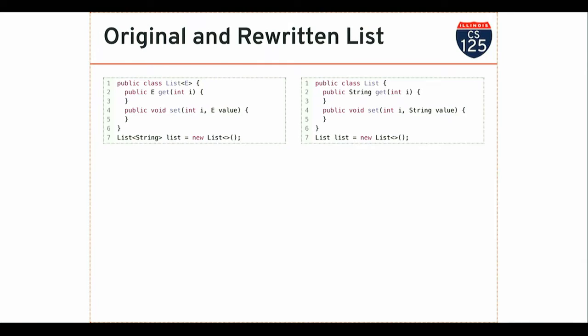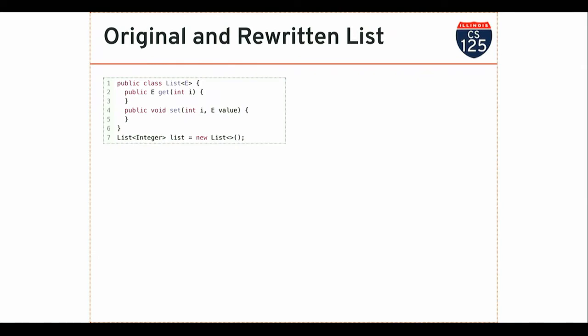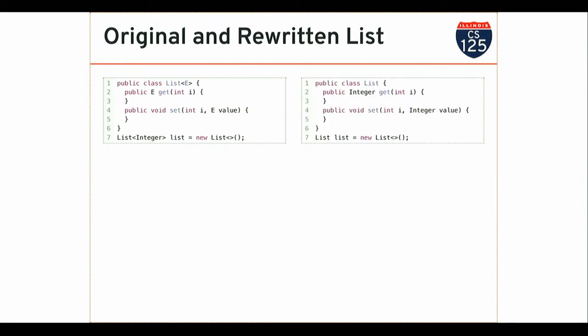So when I take a generic class and create an instance of it, it's almost as if I wrote the String-specific code directly. The difference is this list can only store Strings, whereas a bare list can store anything. But what I'm getting is something that works as if the list could only store Strings. What if I create it with Integers? Then I go through, remove the type parameterization, and replace every E with Integer.